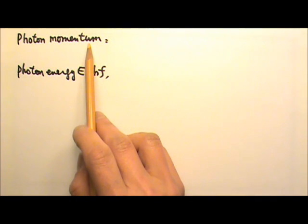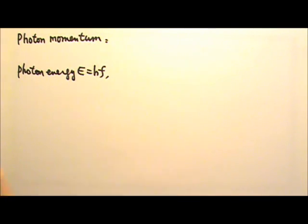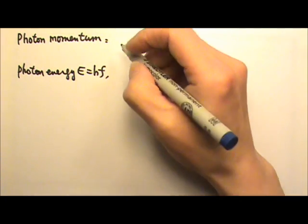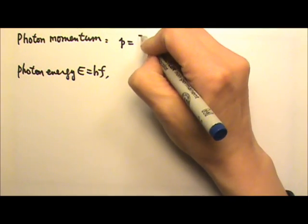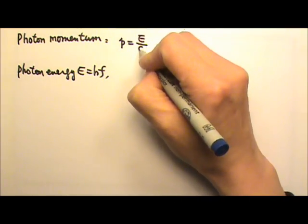I will not derive the equation here. The photon momentum, it turns out, is the photon energy divided by the speed of light, C.